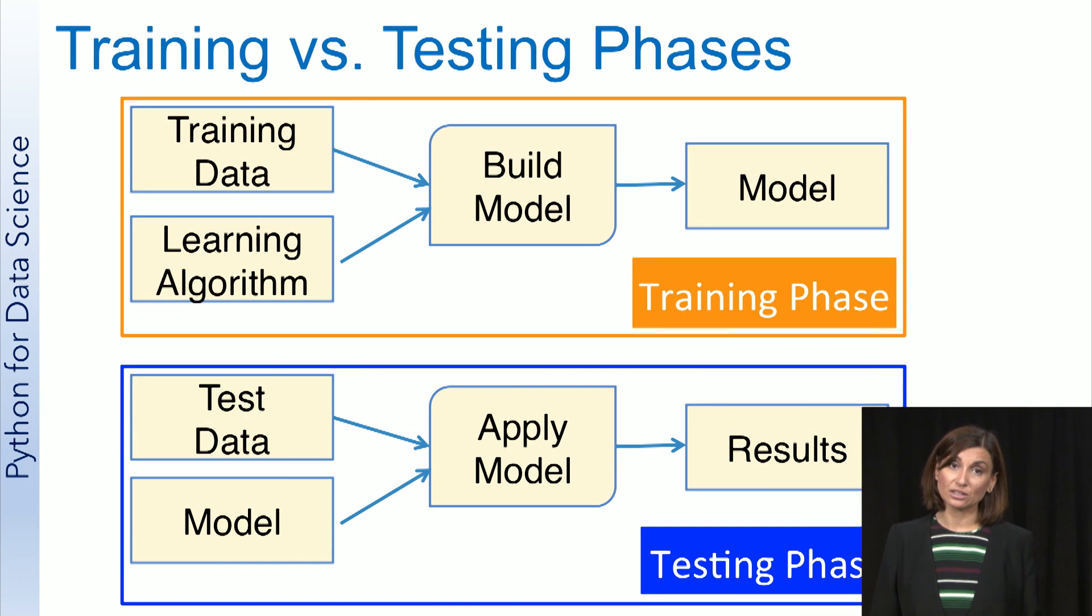As with classification, building a regression model also involves two phases, a training phase in which the model is built and a testing phase in which the model is applied to new data that the model hasn't seen before. The model is built using training data and evaluated on test data.